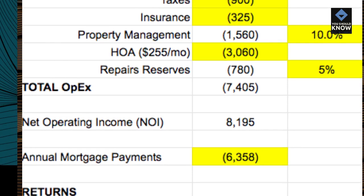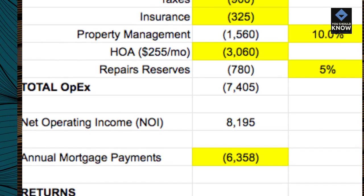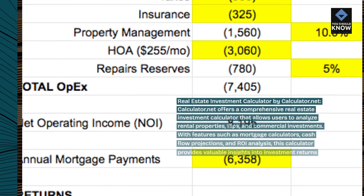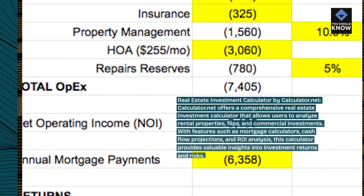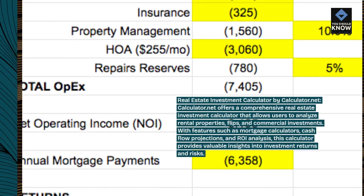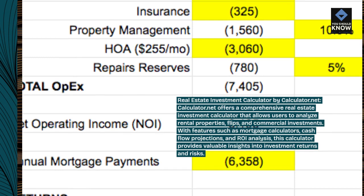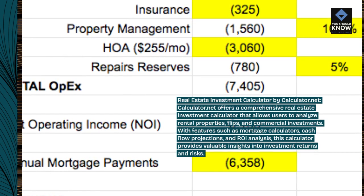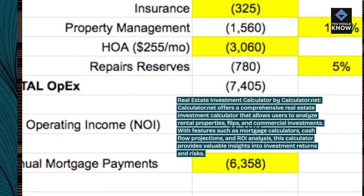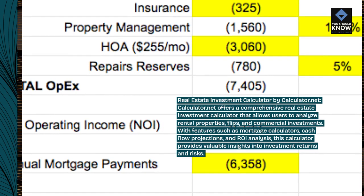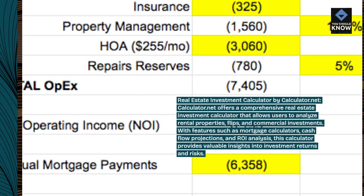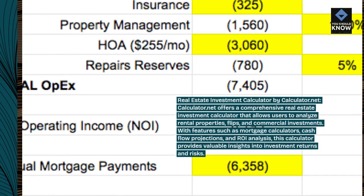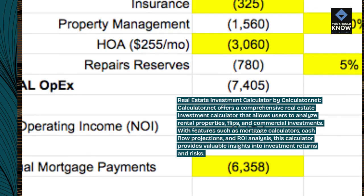Real Estate Investment Calculator by Calculator.net. Calculator.net offers a comprehensive real estate investment calculator that allows users to analyze rental properties, flips, and commercial investments. With features such as mortgage calculators, cash flow projections, and ROI analysis, this calculator provides valuable insights into investment returns and risks.